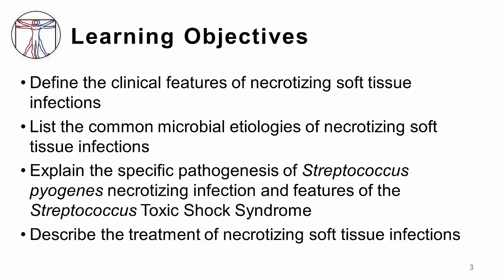By the end of this session, you should be able to define the clinical features of necrotizing soft tissue infections, list the common microbial etiologies of necrotizing soft tissue infections, explain the specific pathogenesis of Strep pyogenes necrotizing infection and features of the Strep Toxic Shock Syndrome, and describe the treatment of necrotizing infections.